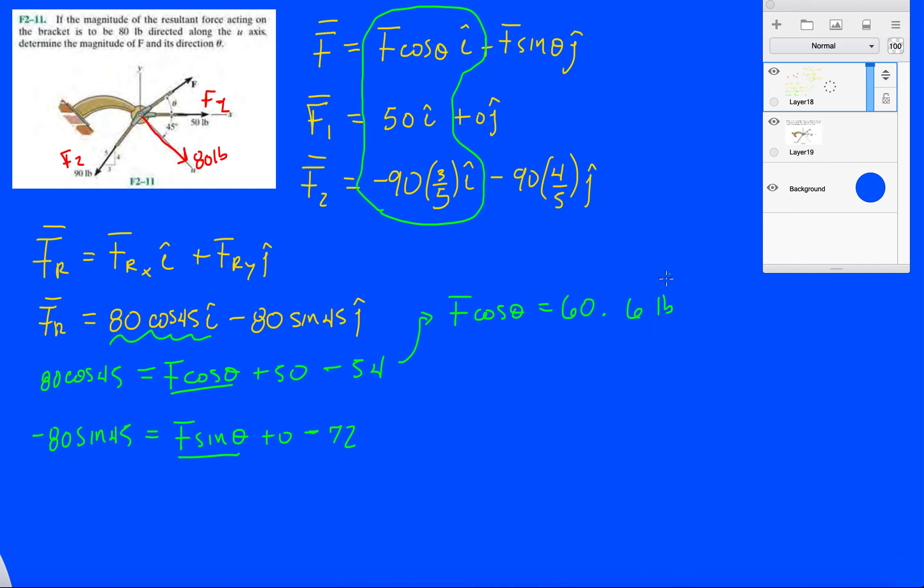Yeah, pounds. Well, let's leave the units for now. And then F sine theta, it'll be minus 80 times sine 45 plus 72, and that'll be 15.4.